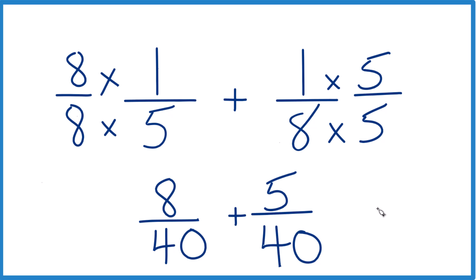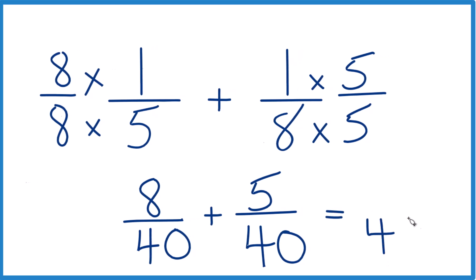So when we add our fractions together here, the denominators are the same. When we add fractions, we just keep that the same. And then 8 plus 5, that's 13.